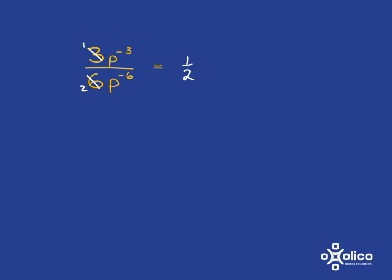Now let's have a look at our p's. We've got p to the negative 3 at the top and p to the negative 6 at the bottom. So we can use our rule for division. It's going to be p to the negative 3. And then you've got to subtract what's at the bottom. Now we just need to sort that out. And that's going to be p to the negative 3 plus 6. And so what we're going to get is p to the power of 3.